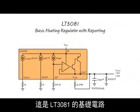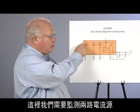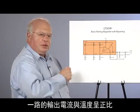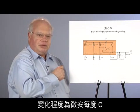This is the basic circuit of the LT3081. We have two current sources for monitoring. One provides an output current proportional to temperature, and we get 1 microamp per degree C.